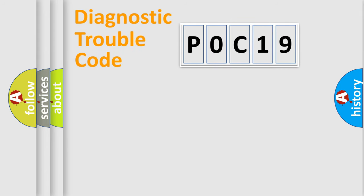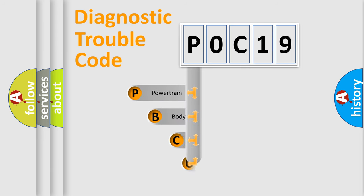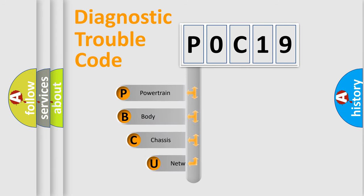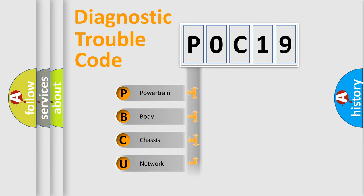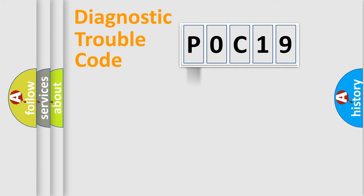Let's do this. First, let's look at the history of diagnostic fault code composition according to the OBD-II protocol, which is unified for all automakers since 2000. We divide the electric system of the automobile into four basic units: powertrain, body, chassis, and network.